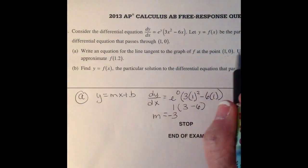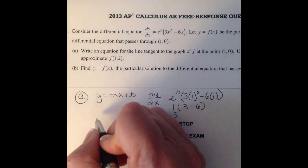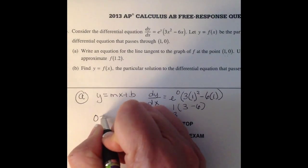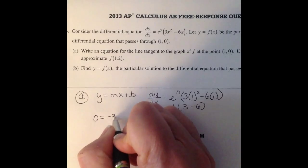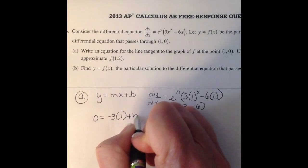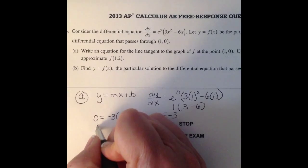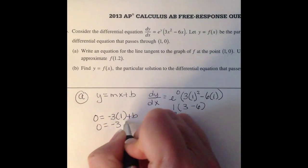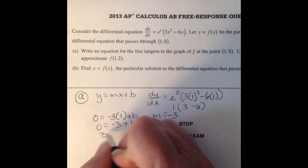All right. We've got our ordered pair (1,0). So we're just going to come over here and go 0 = -3(1) + b. So 0 = -3 + b. 3 is b.